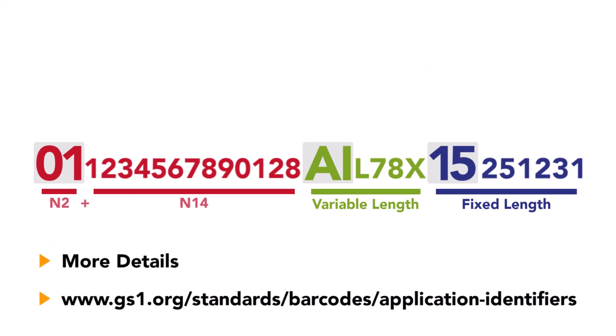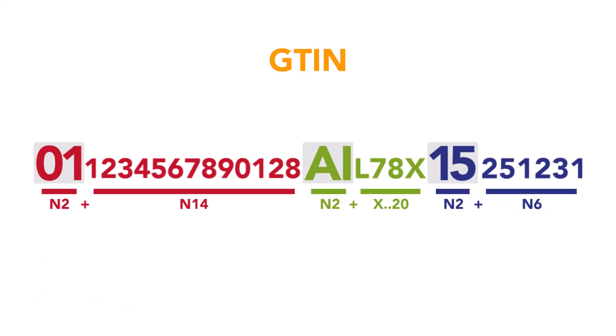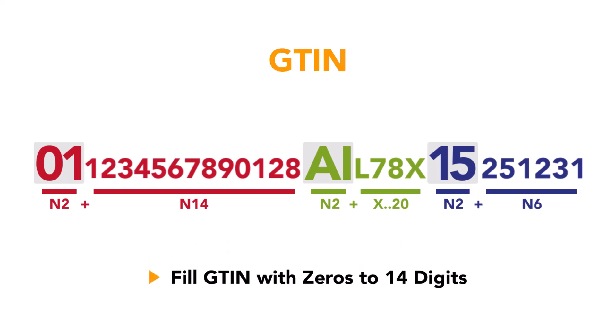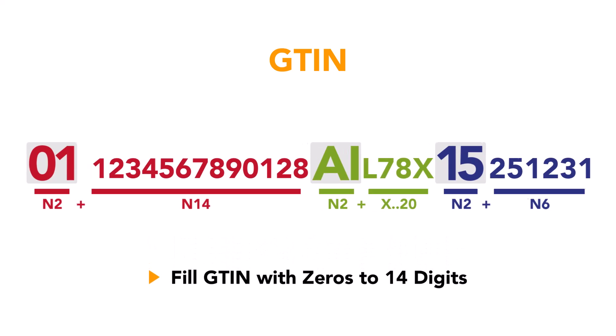N2 plus N14 for GTIN, meaning two digits for the AI itself and 14 digits for the GTIN. If necessary, leading zeros must be added to the GTIN to achieve the desired length.